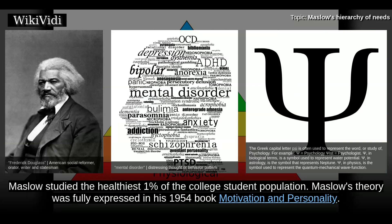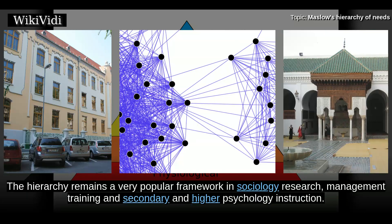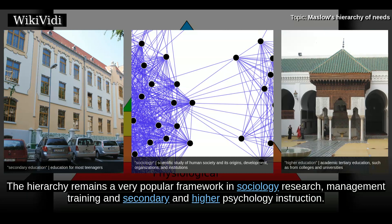Maslow's theory was fully expressed in his 1954 book 'Motivation and Personality.' The hierarchy remains a very popular framework in sociology research, management training, and secondary and higher psychology instruction.